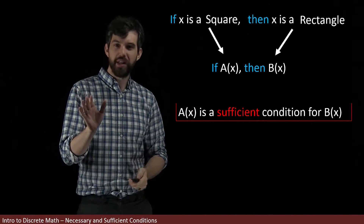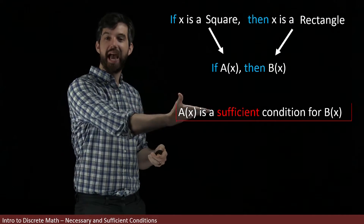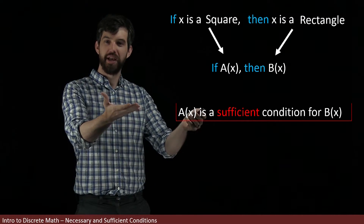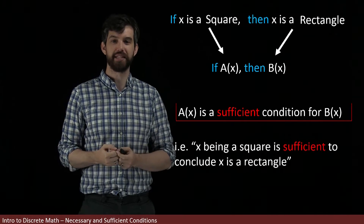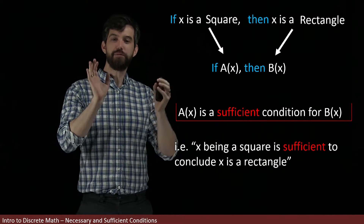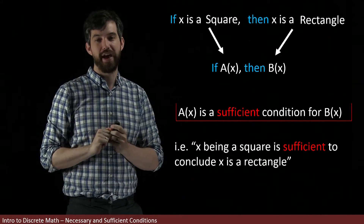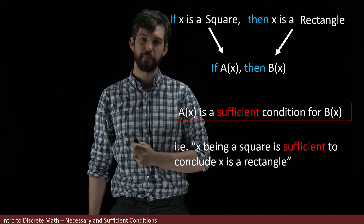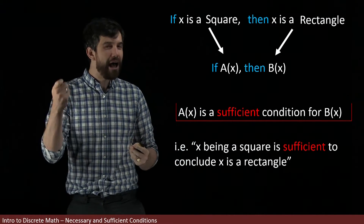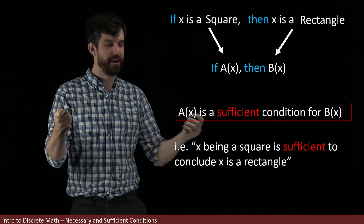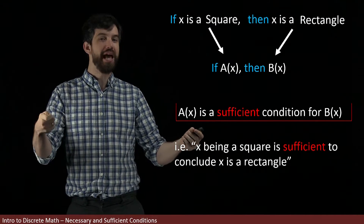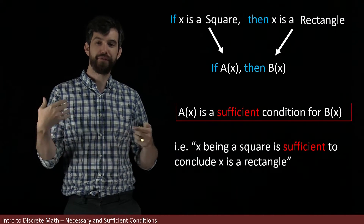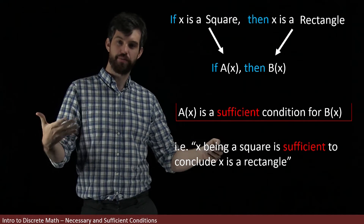It's worth noting that there might be other ways to reach the second conclusion without having the first. For example, x being a square — that's A(x) — is sufficient to conclude that x is a rectangle. However, I don't have to have it being a square in order to get a rectangle; it could be something else and still be a rectangle. That's why we call it a sufficient property.